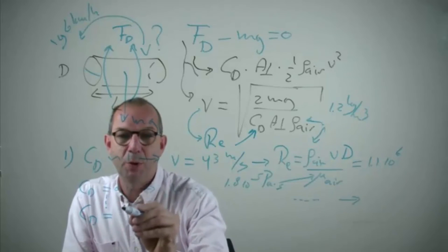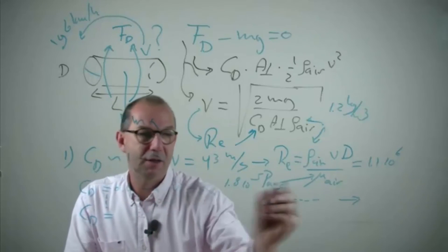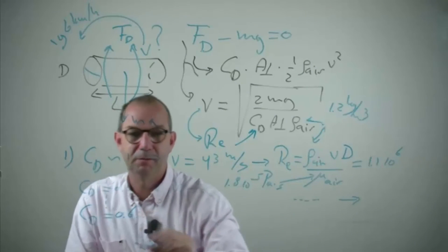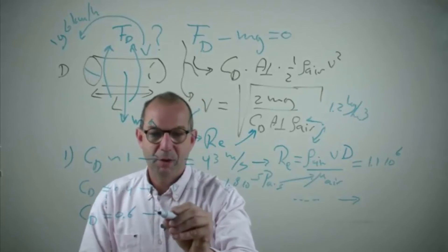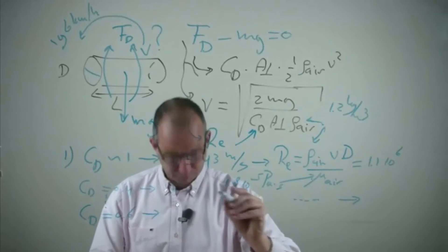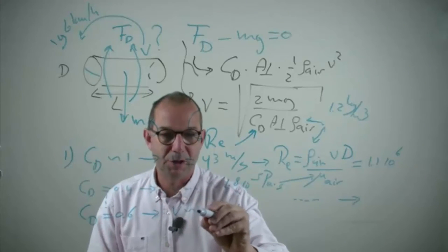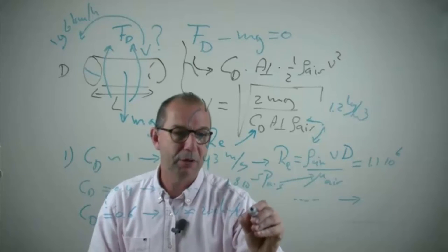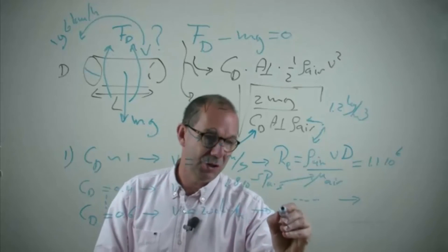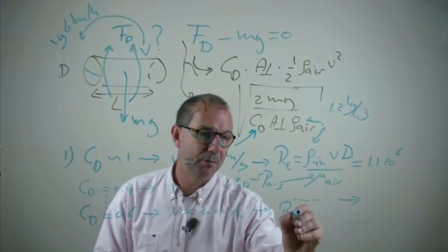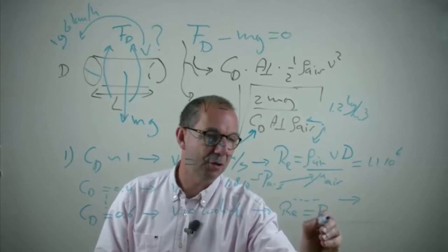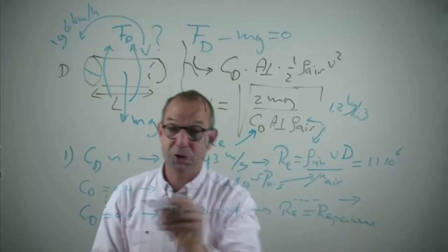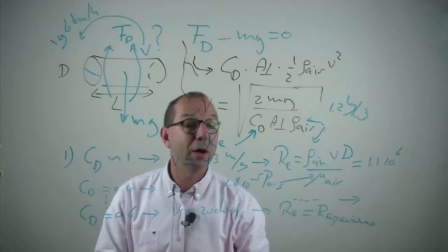In this case is that we at some point in the iteration will find that the new Reynolds number gives a CD of 0.6. We compute a new velocity which is about 200 km per hour and we get the same Reynolds number back. The Reynolds is then equal to that of the previous estimate. And thus the CD will be the same and we found the solution.